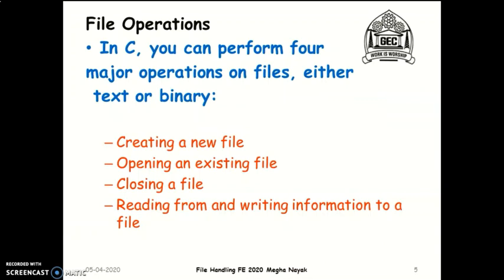C gives us different file operations, which are analogous to file operations you already do. To create a Word file, you go to the software and say file, new, open. If there is an existing file, you open it from its location. Once you finish all operations on a file, you close it. File handling in C helps you create a new file, open an existing file, read from the file, write information to a file, and close a file. Always remember: you read from a file and write to a file.